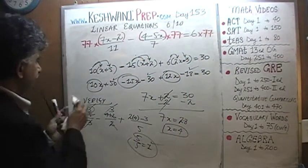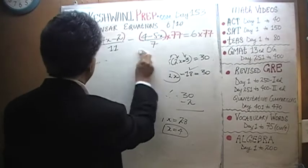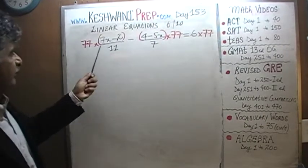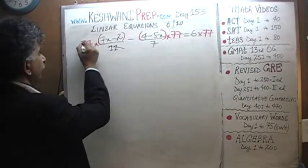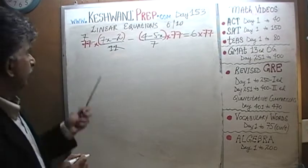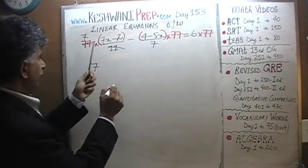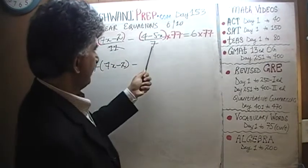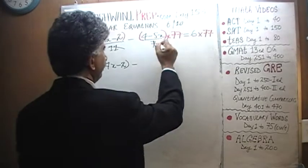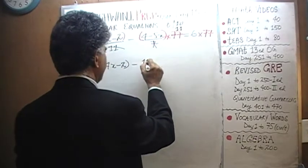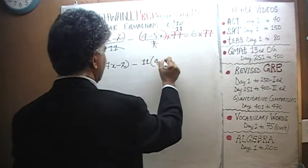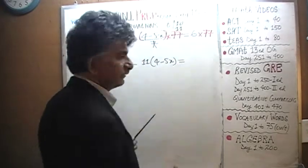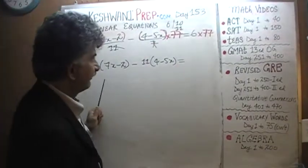Let's see what we can do. 77 divided by 11 is 7, so that 11 goes away and we end up with 7 times 7x minus 2. Minus 77 divided by 7 is 11, so it's 11 times 4 minus 5x. That equals 6 times 77 — we're going to have to figure out what 6 times 77 is.